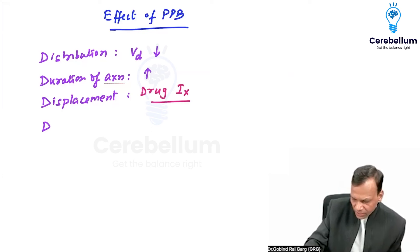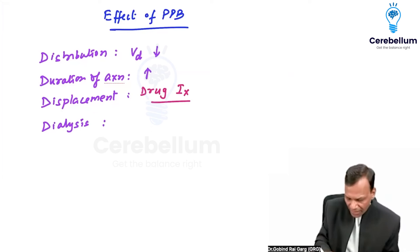And lastly, the fourth one is dialysis. Remember, we do not filter proteins in dialysis. So if a drug has high plasma protein binding, we cannot do dialysis. Not dialyzable.